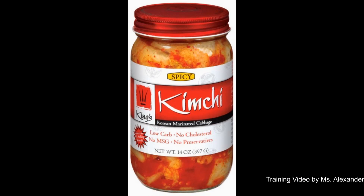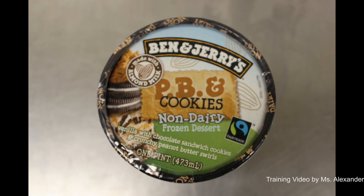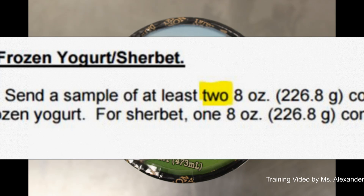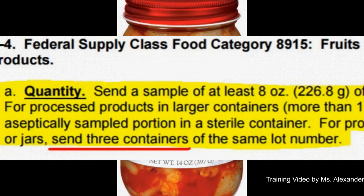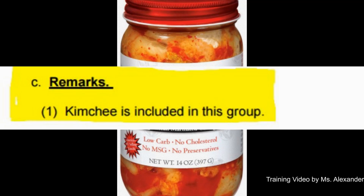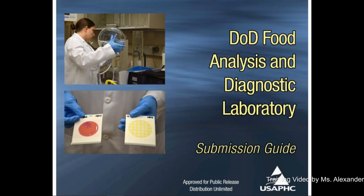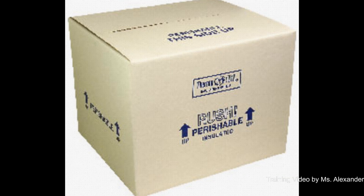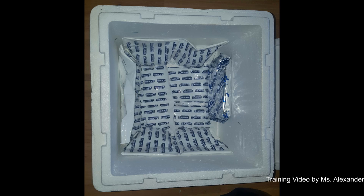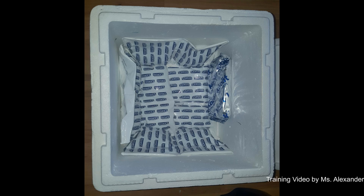There are products such as kimchi or ice cream that require their specific quantity. Although they meet the 8-ounce minimum requirement per container, you still have to submit more than one container. You have to read the lab sample submission guide to be sure you are sending the right amount. Ship perishable items in an insulated container with refrigerant. When using ice packs, make sure to use frozen ice packs instead of chilled ice packs.